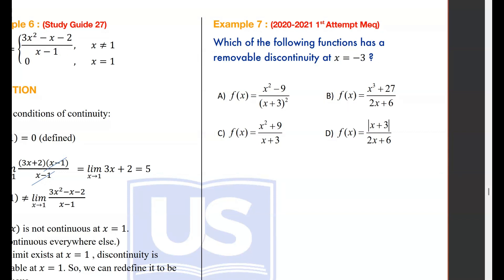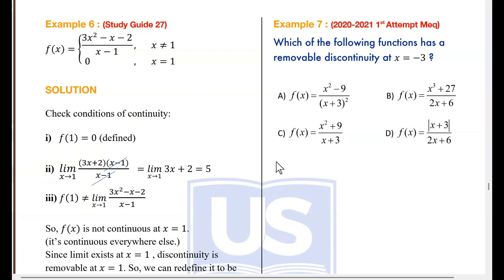How can we understand this question? It's asking about the function that has a limit at x equals negative 3. So if the limit exists at x equals negative 3, then the function is removable at that point. If the limit does not exist, it is not removable at x equals negative 3. The first way of solving this question is finding the limit at x equals negative 3.